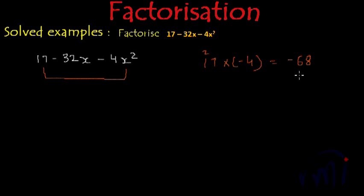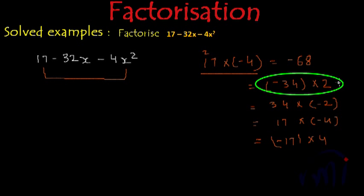And now we have to write the factors of minus 68 in such a way that when two factors are added will result in minus 32. So the factors of minus 68 can be minus 34 multiplied by 2, or they can be 34 multiplied by minus 2, or it can be 17 multiplied by minus 4 which we had originally, or it can be minus 17 multiplied by 4. But here in first place itself we have got a set of factors which when added will result in minus 32. So let's use them directly.